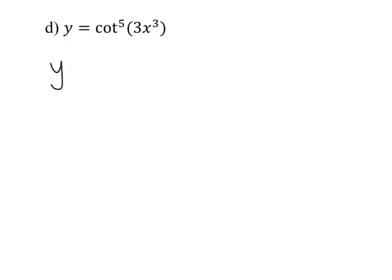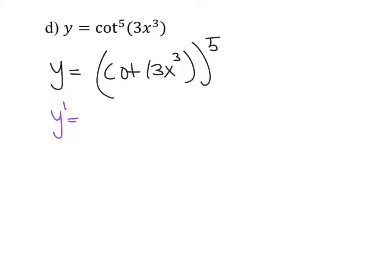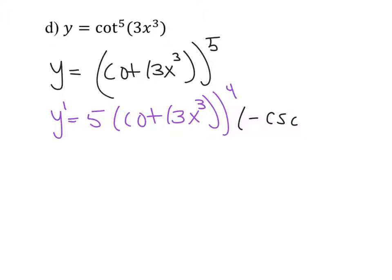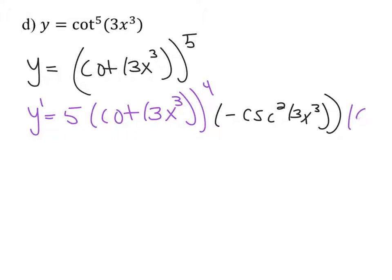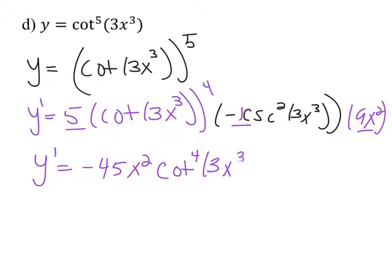The next question is a trig function within a chain rule. Rewrite it with the power on the outside. Take the derivative of the outermost, bringing down 5 and reducing the power to 4. Then the derivative of cotangent is negative cosecant squared, so multiply by negative cosecant squared of 3x cubed. Then take the derivative of the innermost piece, 3x cubed, which gives 9x squared. Multiplying 5, negative 1, and 9 gives negative 45x squared. Final answer: y prime equals negative 45x squared times cotangent to the 4th(3x³) times cosecant squared(3x³).